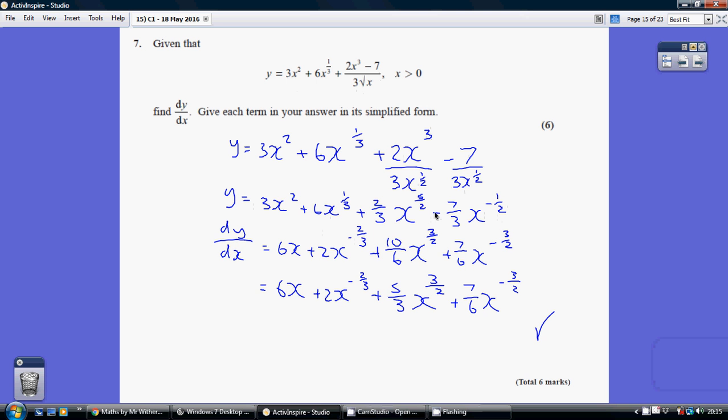And this becomes, remember, minus 7 over 3 times minus a half becomes plus 7 over 6x to the minus 3 over 2 once you've subtracted 1 from the power.